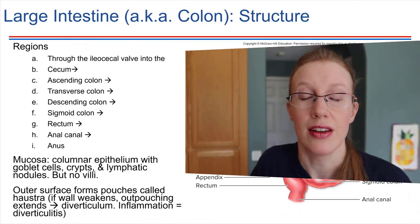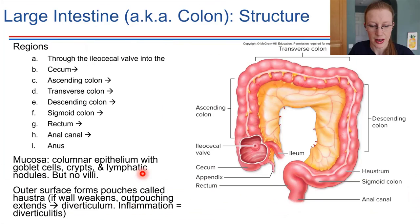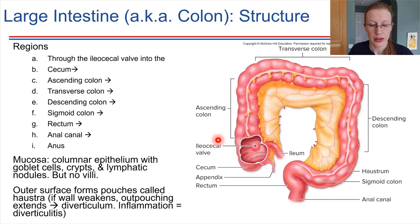Let's talk about the large intestine. The ileum of the small intestine leads to the large intestine; they are connected by a valve. On the picture right here, the valve is labeled — it's the ileocecal valve, connecting the ileum of the small intestine and the cecum of the large intestine.